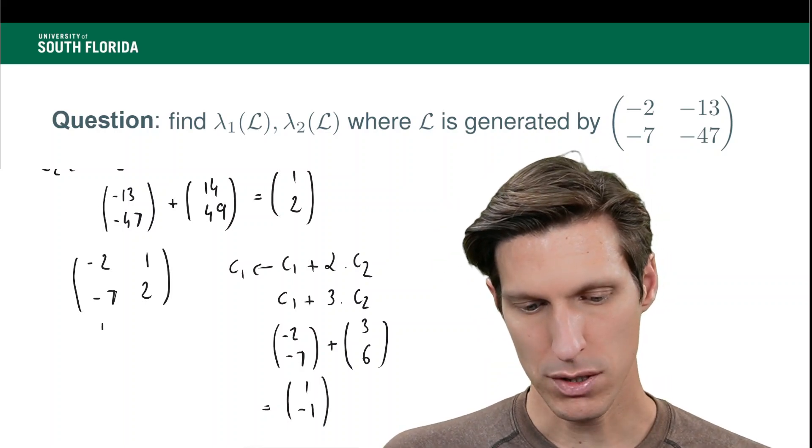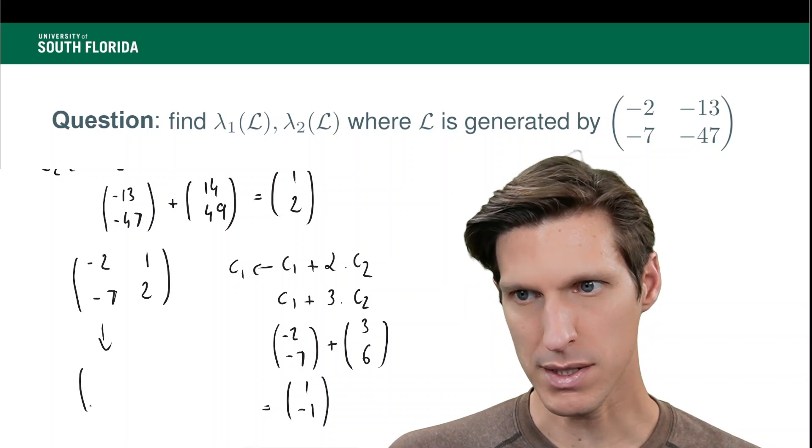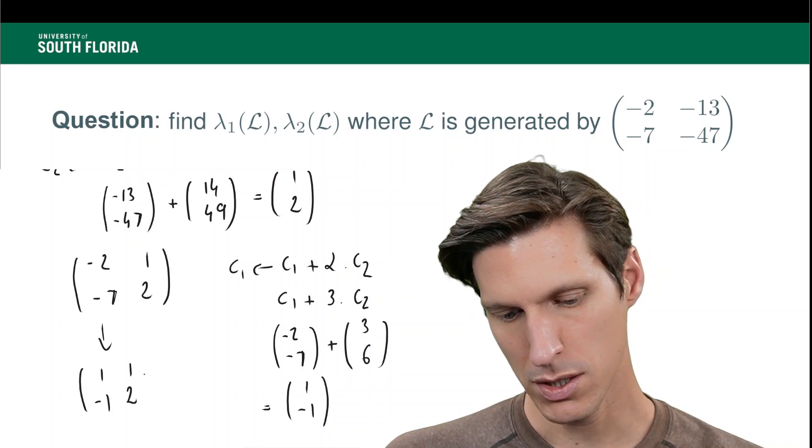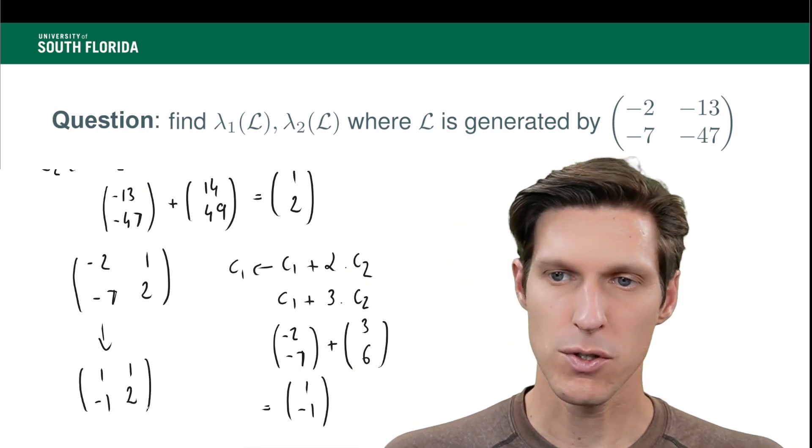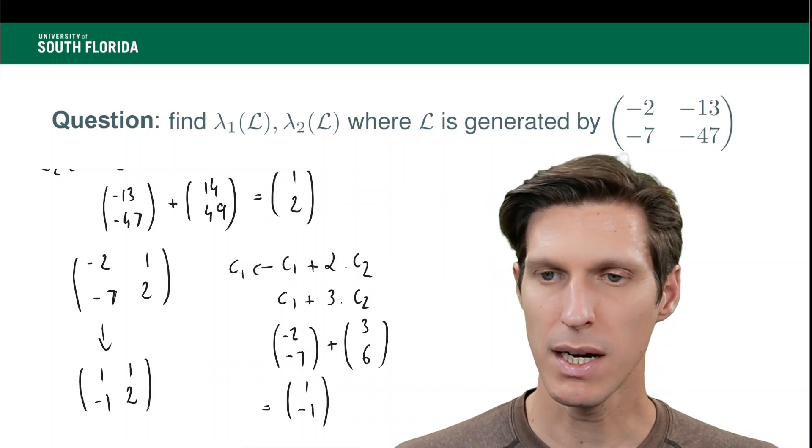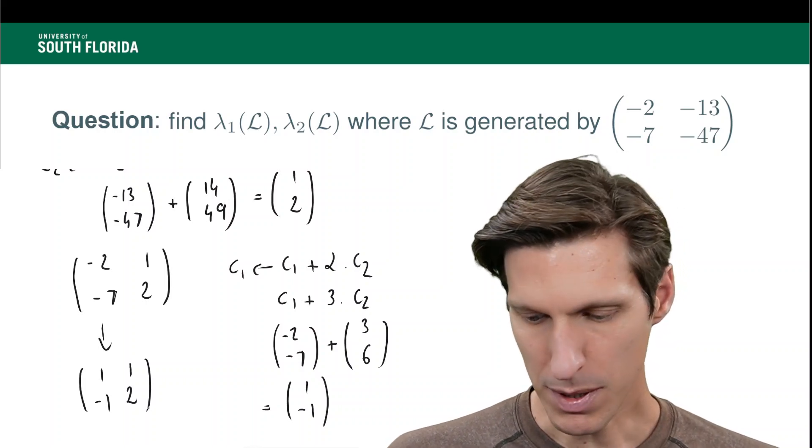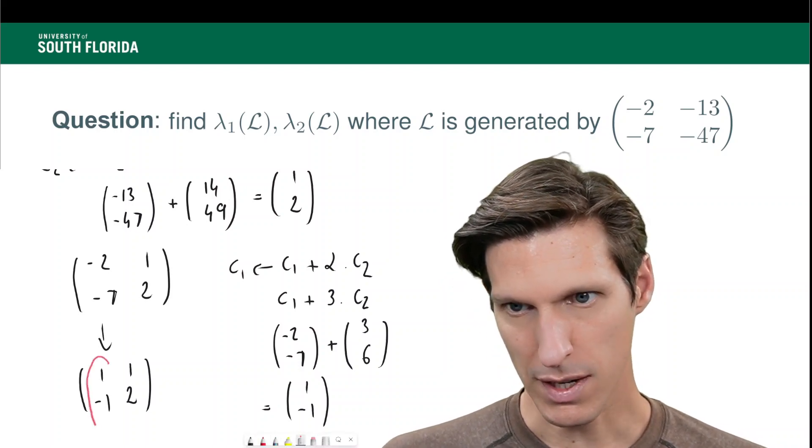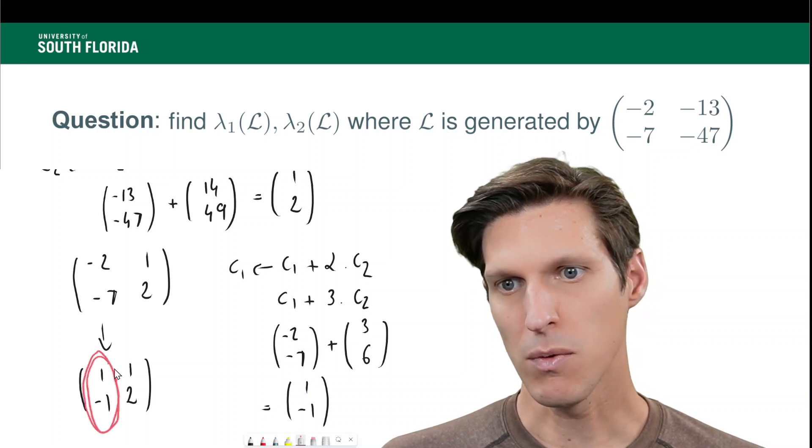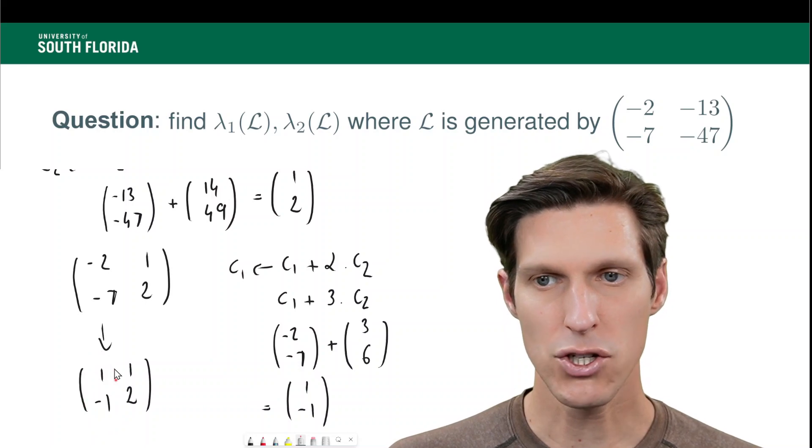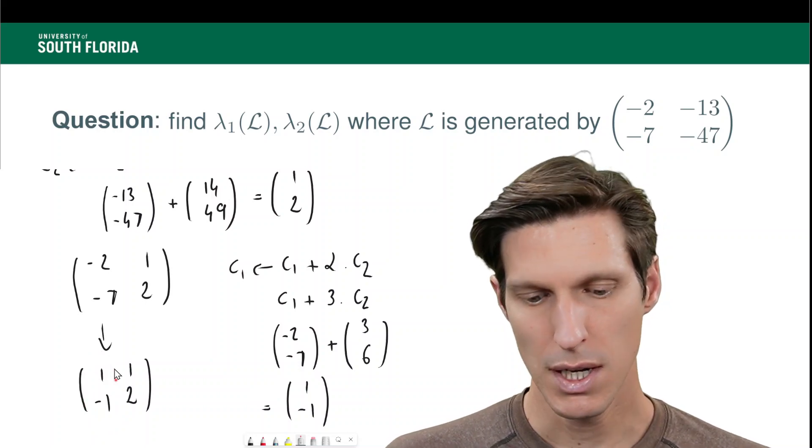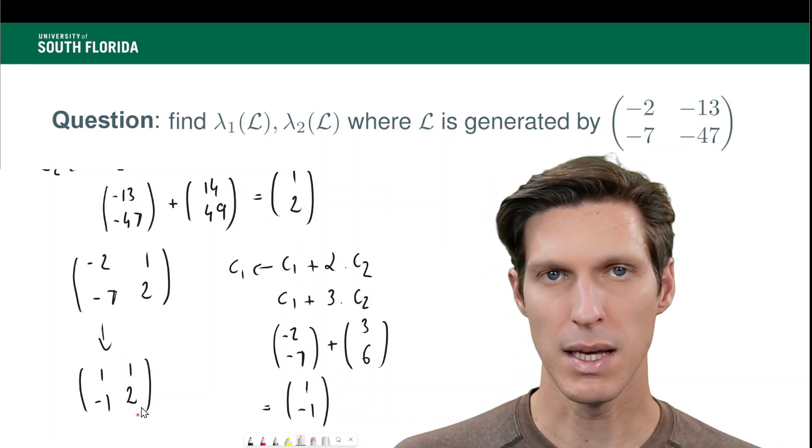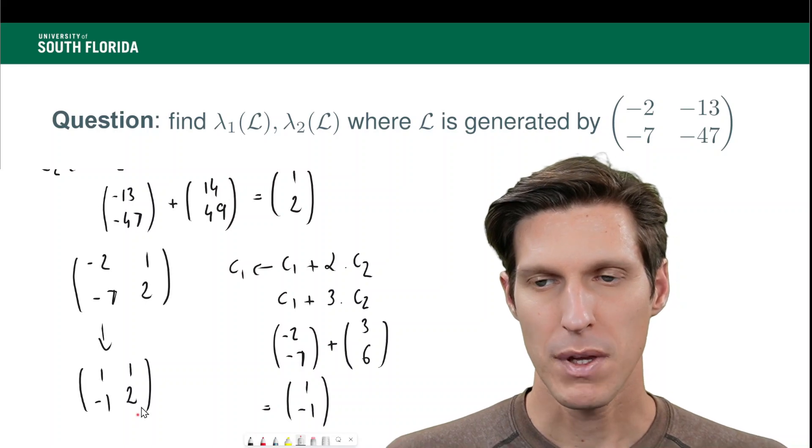So what do we get here? We get C1 plus 3C2. So that's (-2, -7) plus (3, 6), and so the result here is (1, -1). So now I have a new basis now made of (1, -1) and (1, 2). And I find these vectors pretty small, personally. And now I have to decide, so could it be that this vector is the vector of length lambda 1? So it's the shortest non-zero vector. And could it be that this vector is a vector of length lambda 2? The second minima.